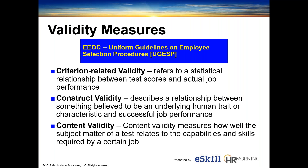As far as validity measures, the Equal Employment Opportunity Commission came up with the Uniform Guidelines on Employee Selection Procedures. These talk about criterion-related validity, construct validity, and content validity. Most test providers have now validated all of their tests using these frameworks. Criterion-related validity refers to a statistical relationship between test scores and actual job performance. Construct validity is the relationship between an underlying human trait and how it relates to a specific job. Content validity measures how well the subject matter actually relates to the specific job in question.